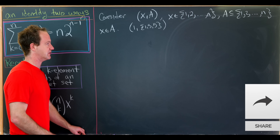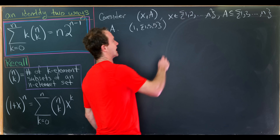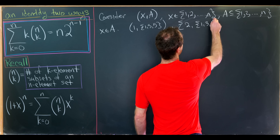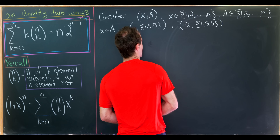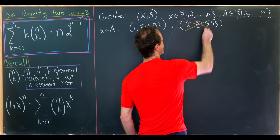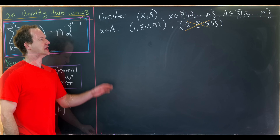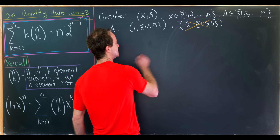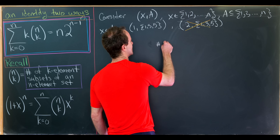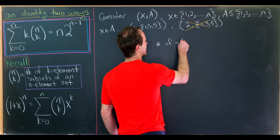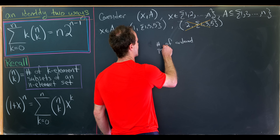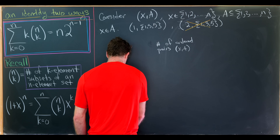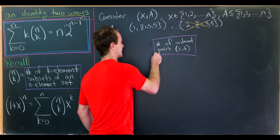A non-example would be 2 comma {1, 3, 5}, because 2 is not an element of {1, 3, 5}, so we would not allow this. The game will be to count the number of such ordered pairs (x, a) two different ways, depending on the order in which we choose x or a.